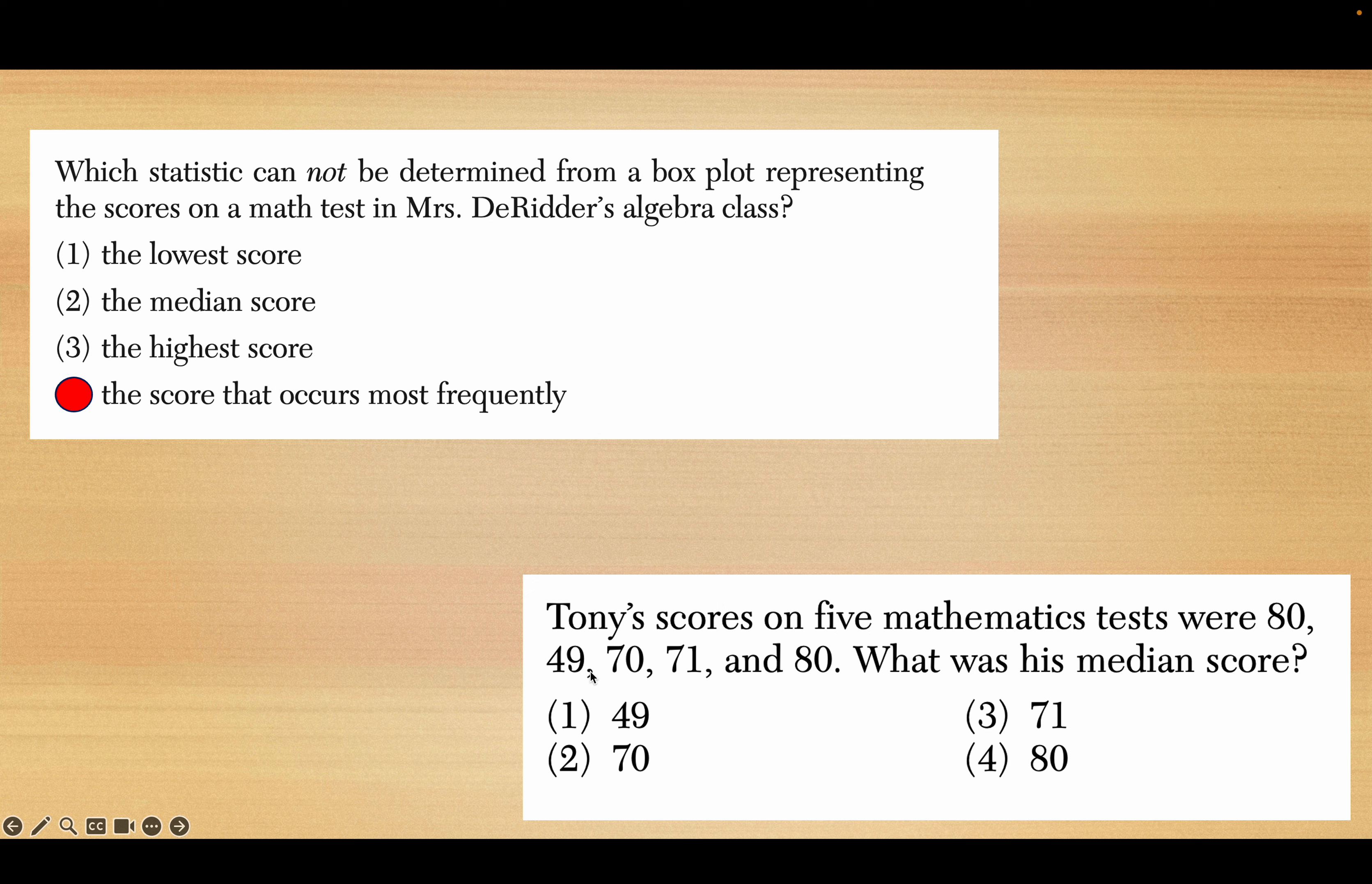Tony scores on five math tests were 80, 49, 70, 71, 80. They want you to choose 70 because they put it in the middle there, but you have to remember anytime you do a median problem you always have to line them up in order. So the middle one when you line them in order, they go 49, 70, 71, 80, 80.